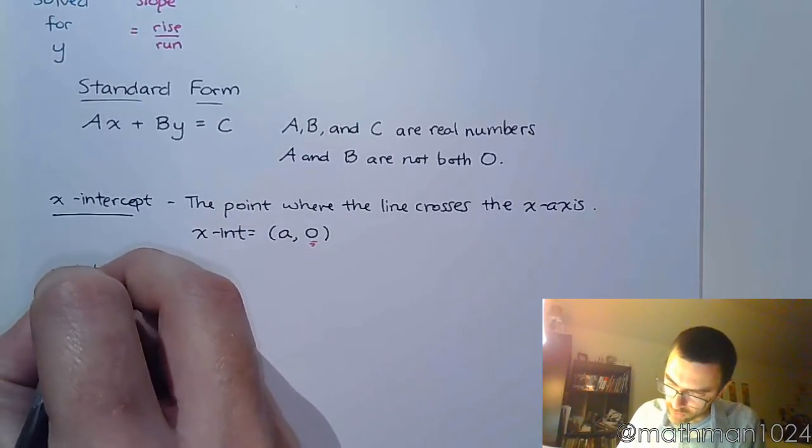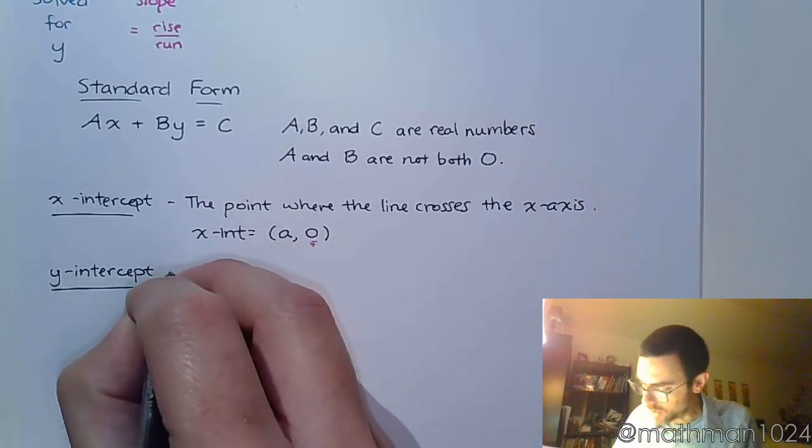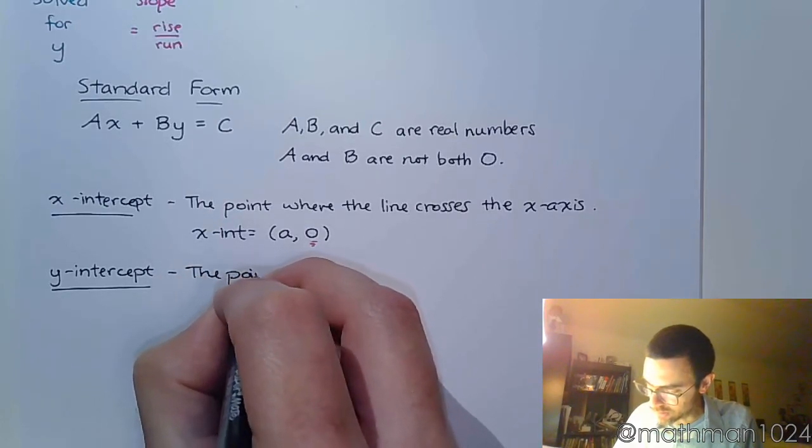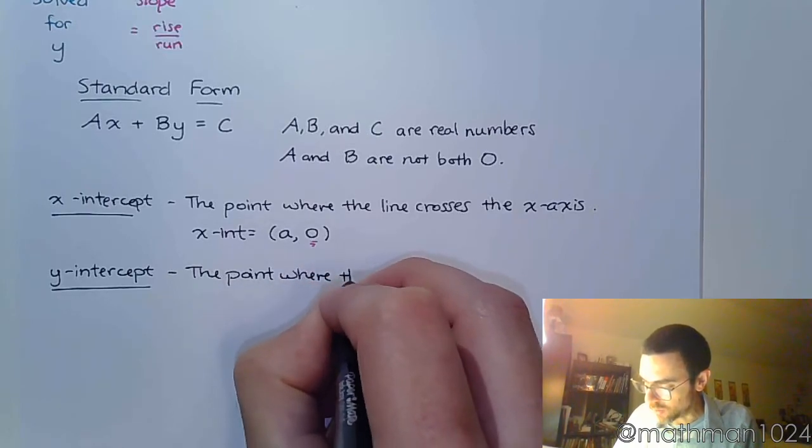Similarly, we have the y-intercept. And the y-intercept is, as you can imagine, the point where the line crosses the y-axis.